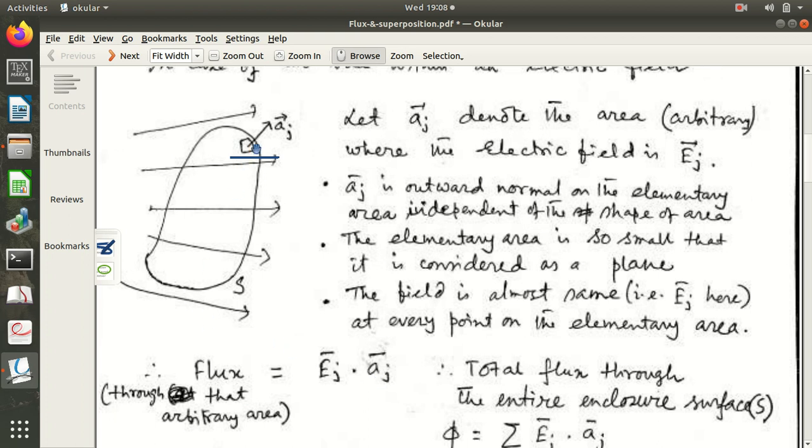Therefore, now you consider another ith area at this place, say you consider, say another area here. You consider another area here, and whatever way you like, you consider another area here, and so what happens, by this way you complete the entire surface by considering elementary areas, A1, A2, A3, A4 and so on to AJ, and you cover the entire surface S by such elementary areas.